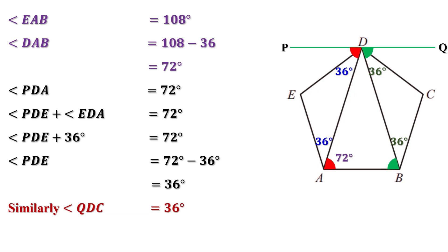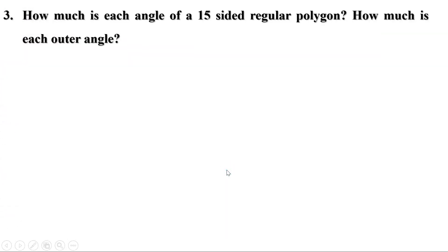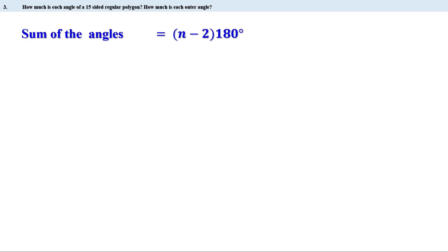At the end of this chapter there are 9 problems. Let us do some of them from page 58, starting with the third problem. How much is each angle of a 15-sided regular polygon, and how much is each outer angle? Here the number of sides is 15. We know the sum of angles of a polygon with n sides is (n minus 2) into 180 degrees. With n equal to 15, the sum is 15 minus 2, or 13 into 180.